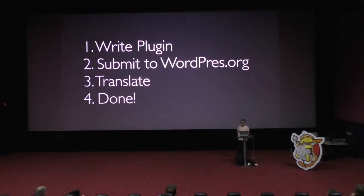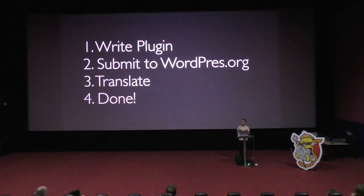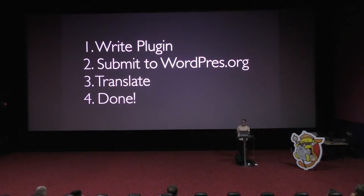Essentially, we only have to follow three short steps. First, we develop a new plugin and use the available translation functions to internationalize it. Then we submit it to WordPress.org, where it can be translated using the translation platform. After that, WordPress handles everything else for us, and our plugin can be fully localized out of the box.